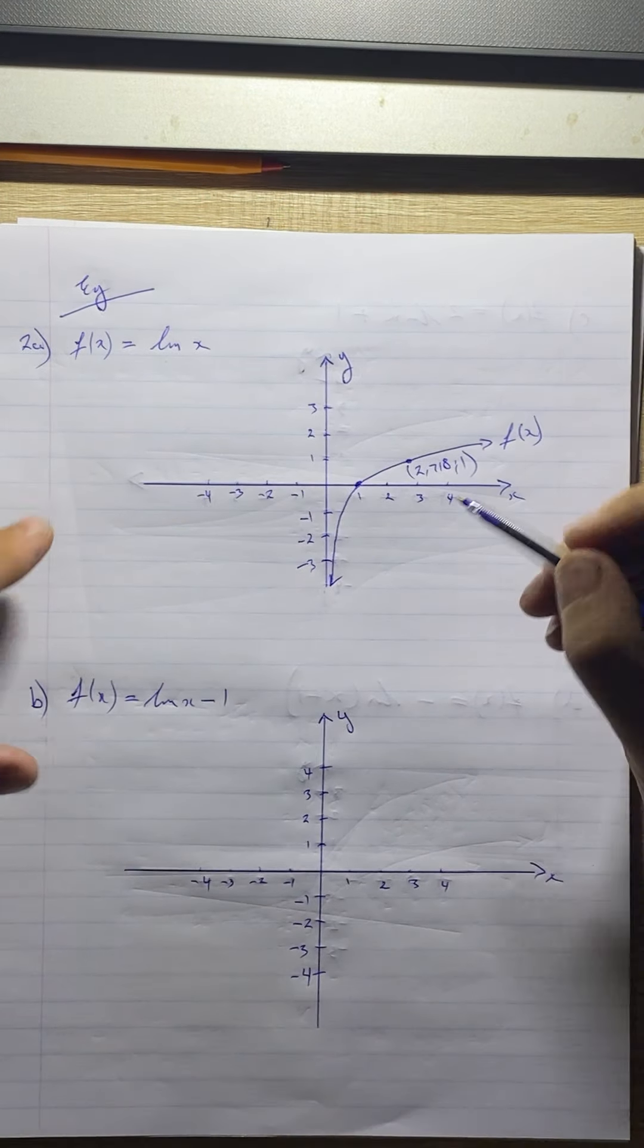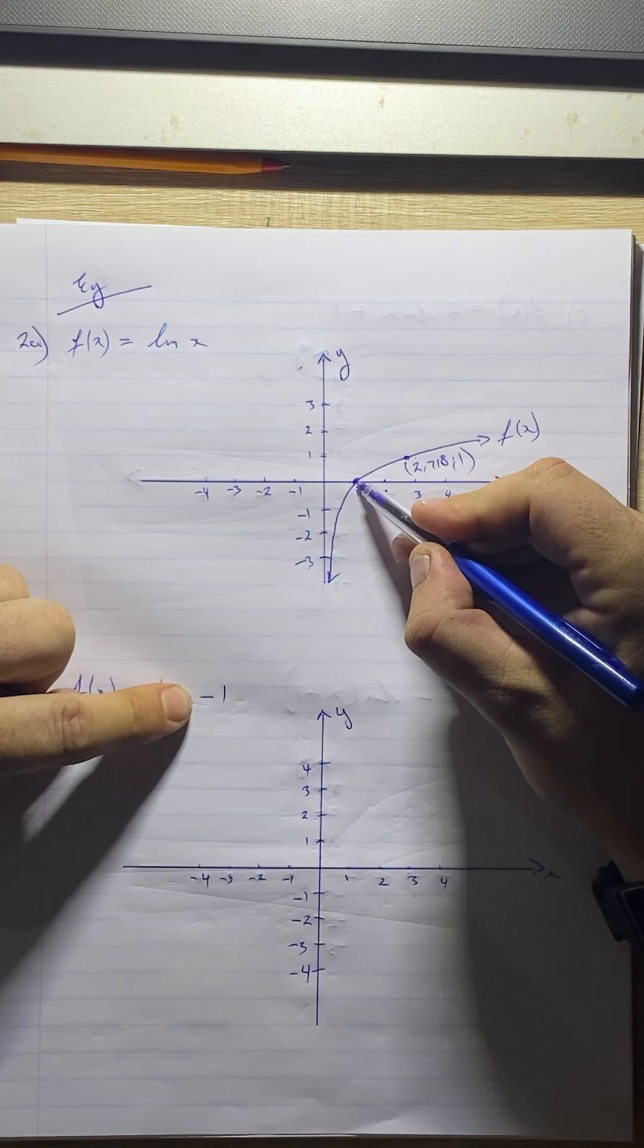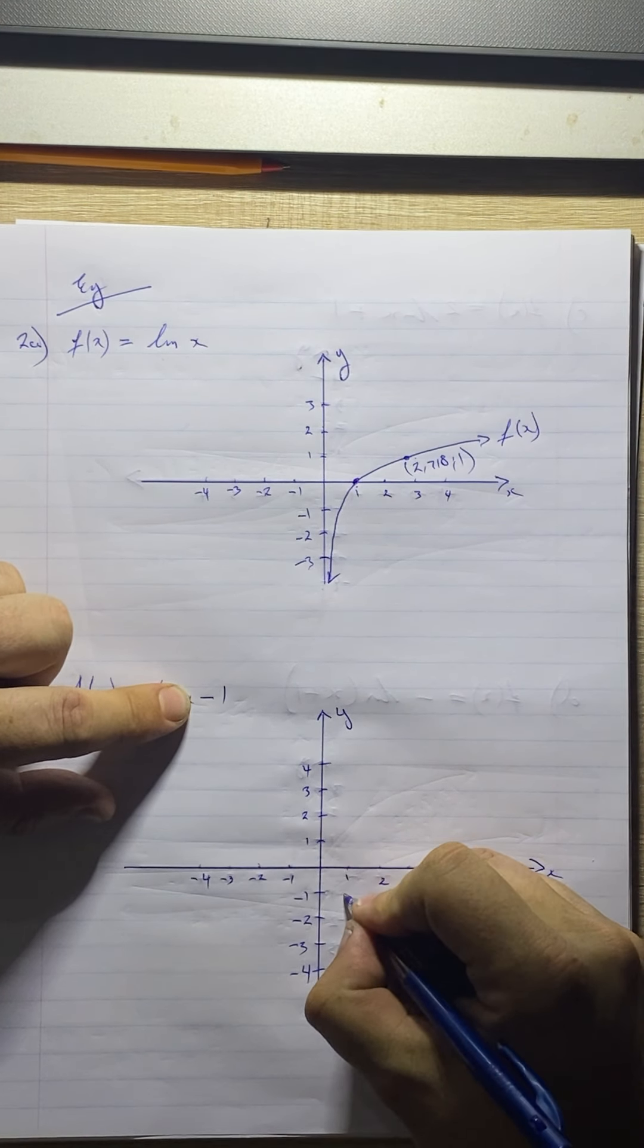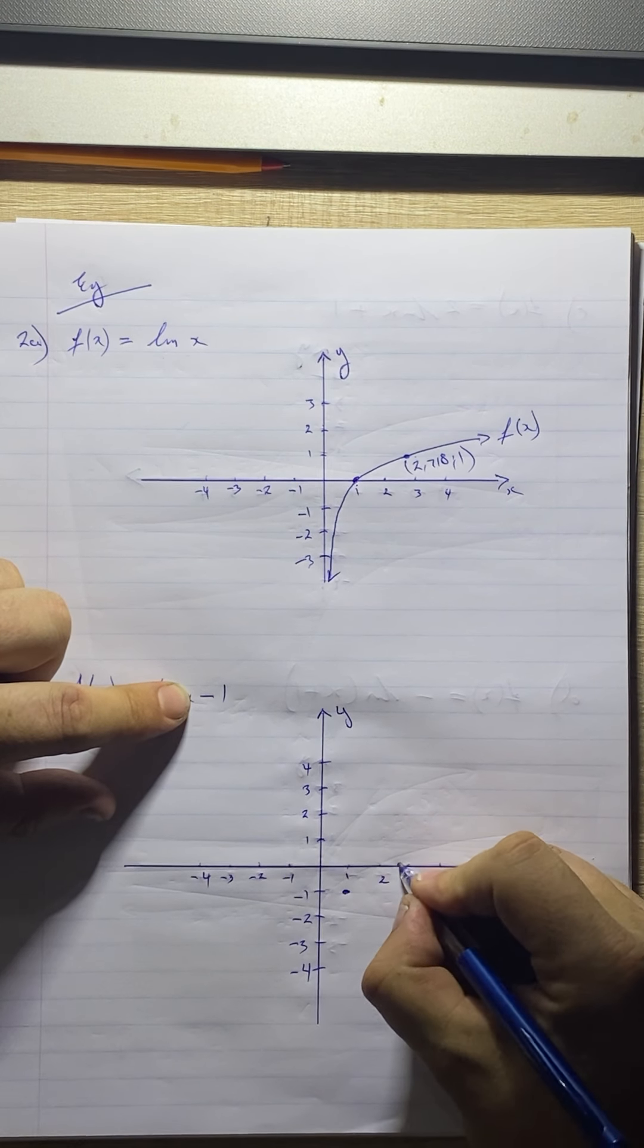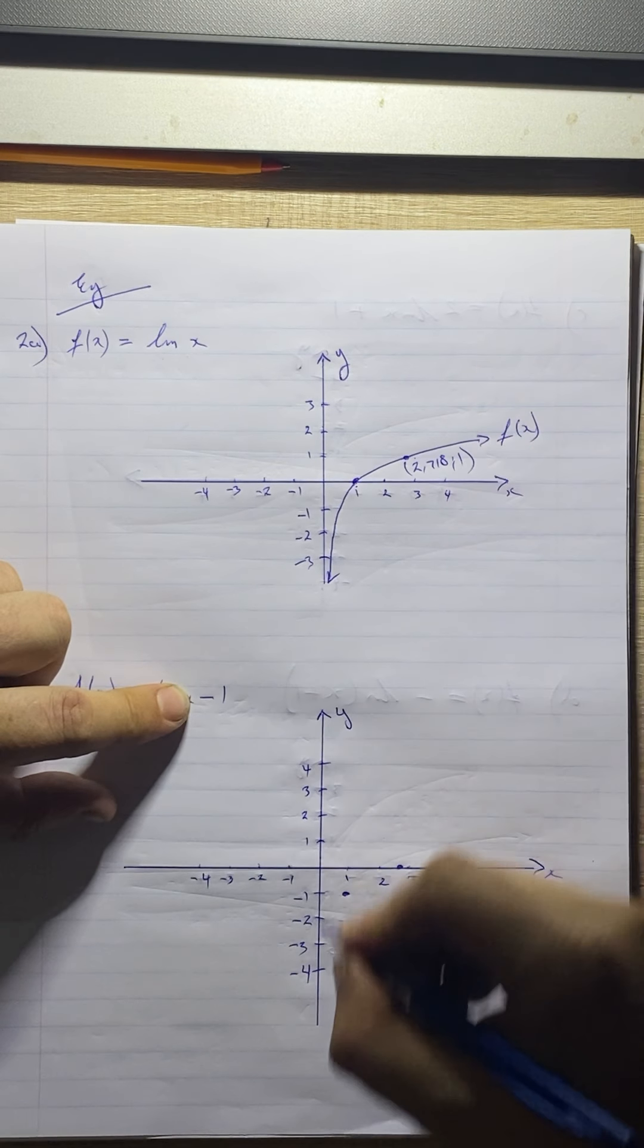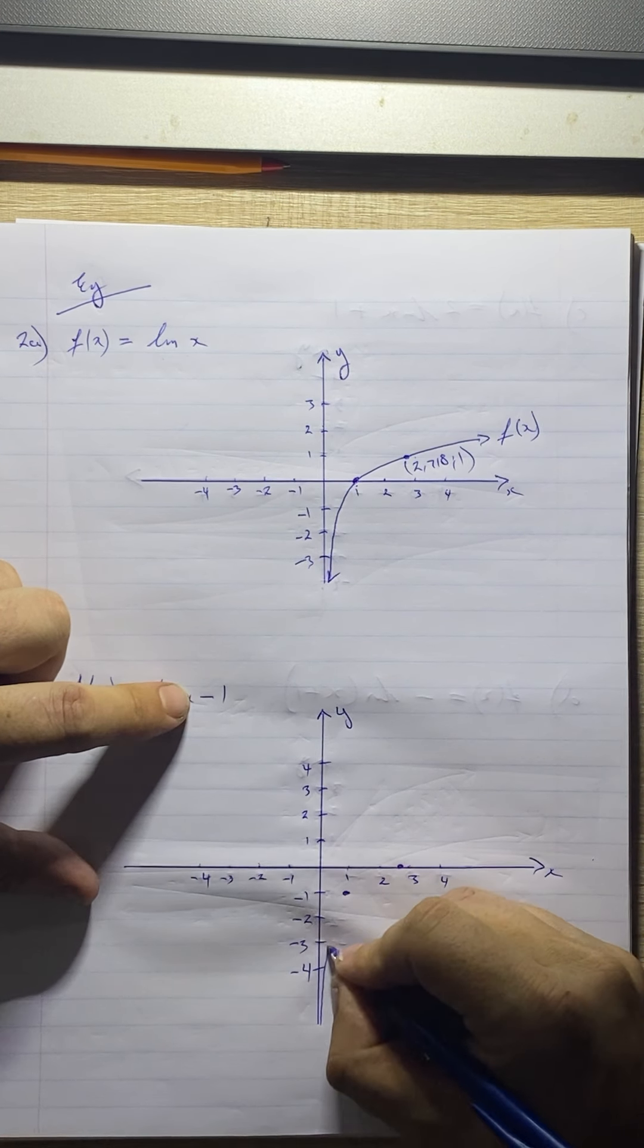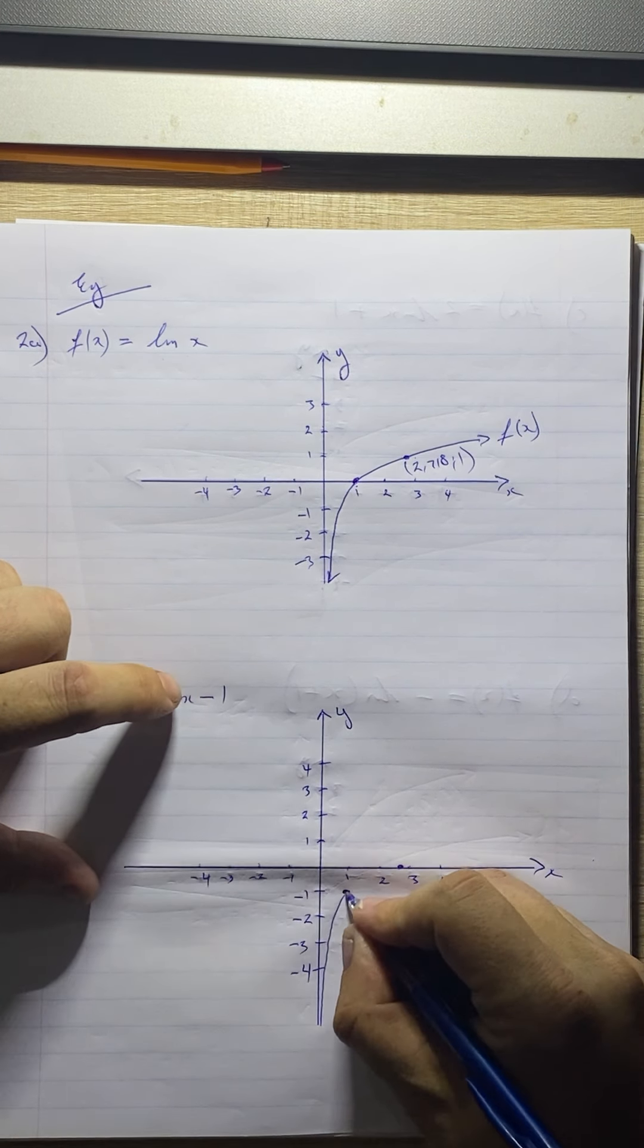So what I want you to do for this one is just take your two characteristic points over here. So we have that one at 0. It's now moving down by 1. So it's now going to go to minus 1. This one was at 1 at 2.718. It was at 1. It's now going to go down to 0 because we're moving it down by 1 unit. So here's our graph here, going through this point, through this point, and then shooting off. Label your graph f. And then what I'm going to do here is I'm just going to label this point over here. So this is going to be 2.718 and 0.